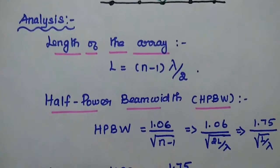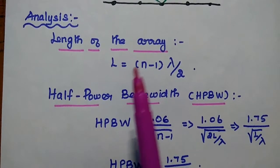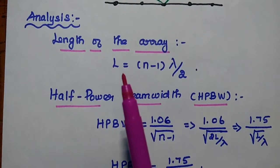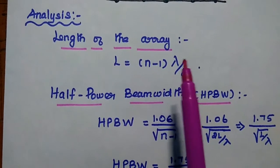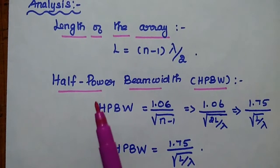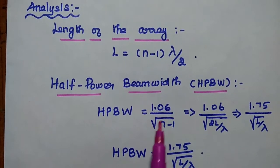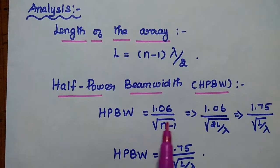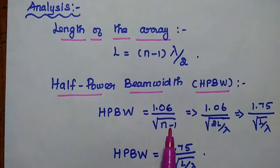Next, analysis for characteristics of this binomial array antenna. The length of the array can be determined by using L equals n minus 1 times lambda by 2. Half power beam width, HPBW, is equal to 1.06 by square root of n minus 1, where n is the number of elements.